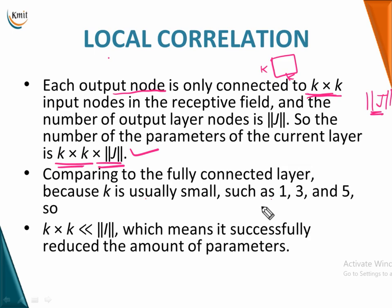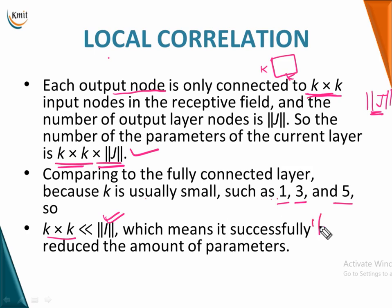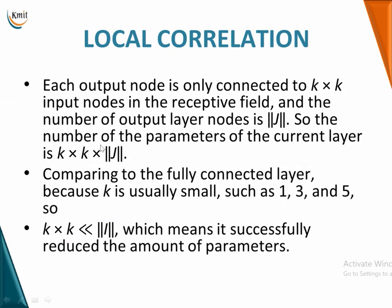Since you want the nearest, most important pixels, k values are always kept small, and k×k should always be less than the number of input nodes. Therefore, you can successfully reduce the number of parameters even when working with bigger images. That's how important local correlation and the receptive field are — they help reduce the number of parameters significantly.